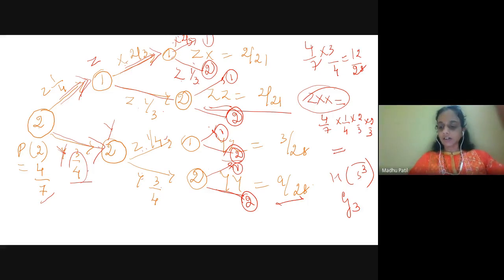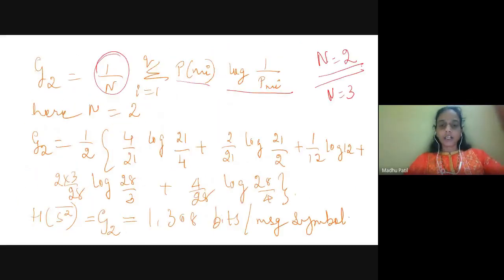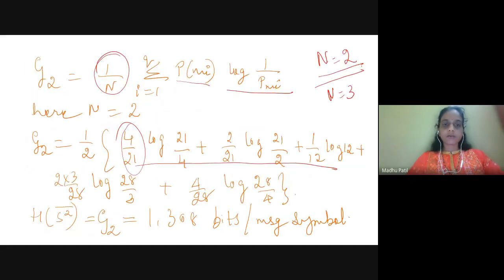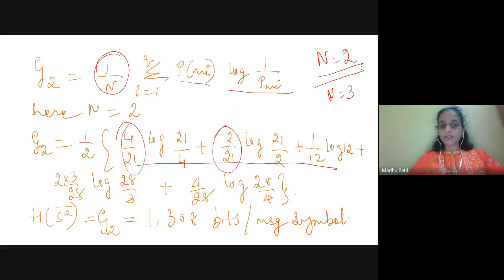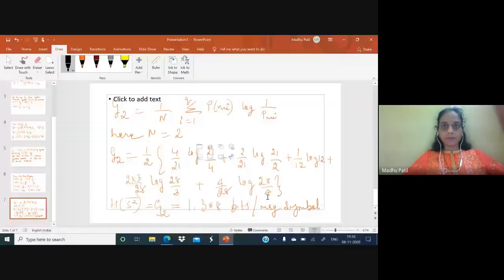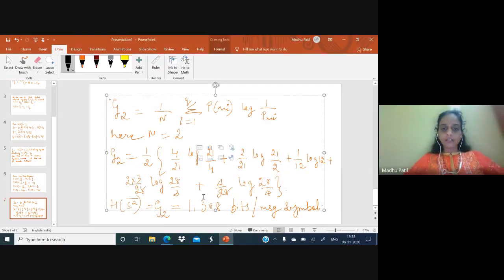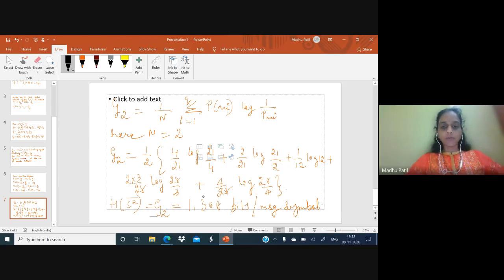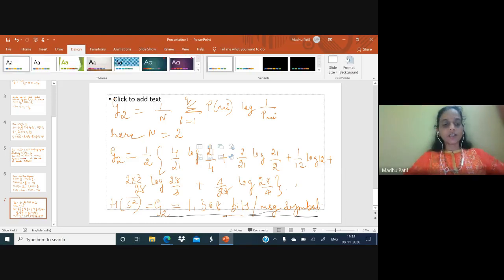Extending the tree further, for each branch we continue writing probabilities and symbols at each state. So I calculate g2 with n = 1/2, using probabilities p(xx) = 4/21, p(zz) with both trees added (2/21), and the other symbol pairs. The final result is g2 = h(s²) = 1.308 bits per message symbol. Using the tree diagram, we can find the entropy of the source either at the end of the first or second symbol interval.